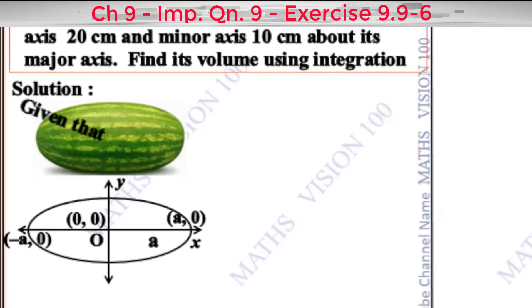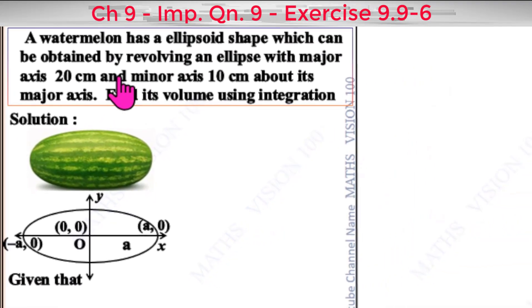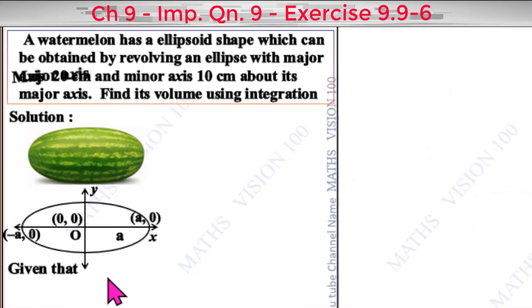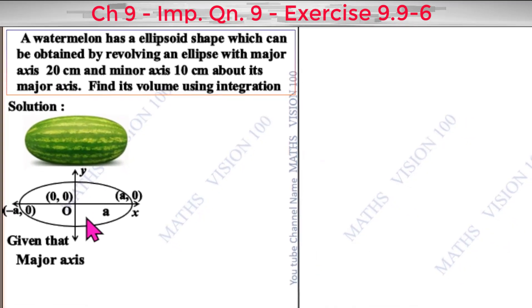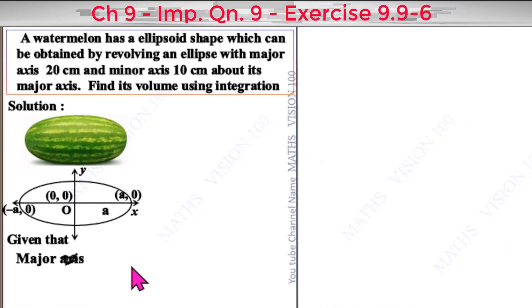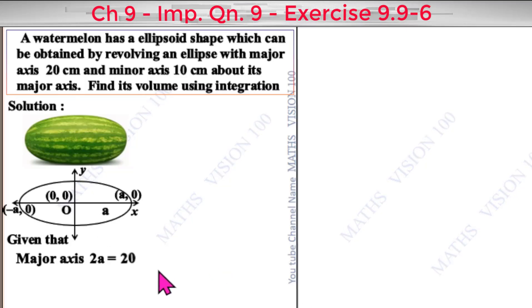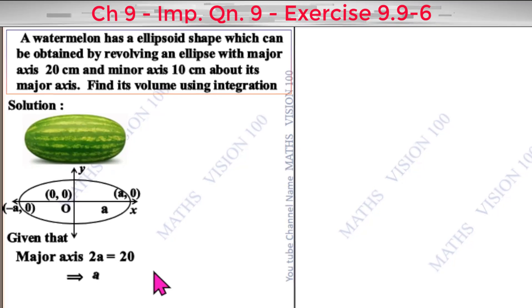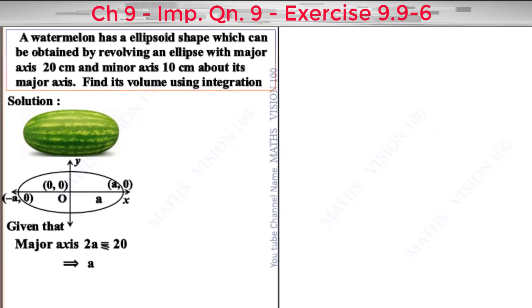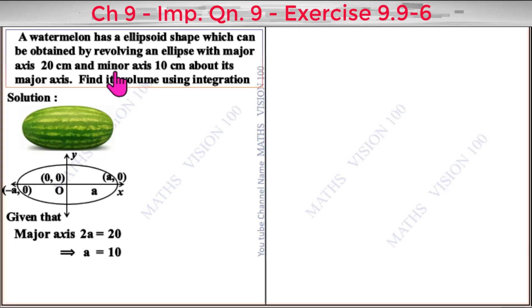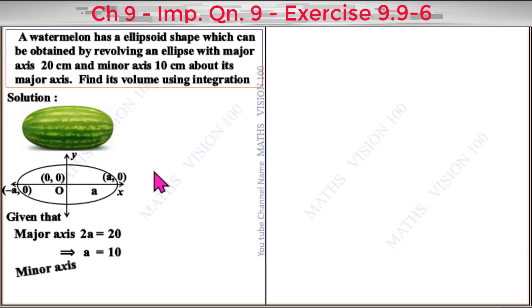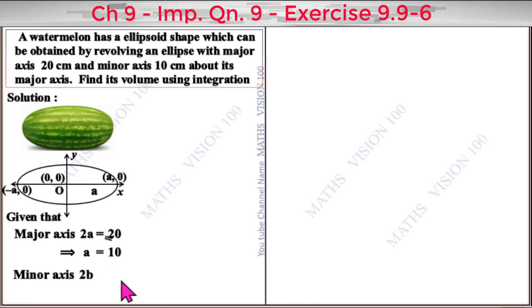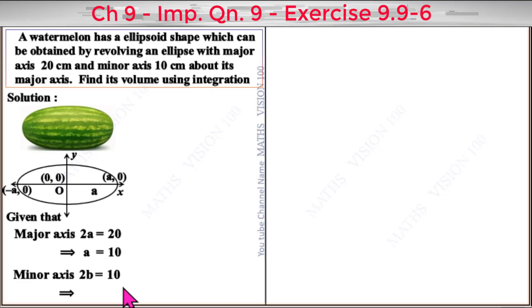Given that the major axis length is 20 centimeters, and the major axis length is 2a, we have 2a = 20, so a = 10. The minor axis is 10 centimeters, so 2b = 10, which gives b = 5.